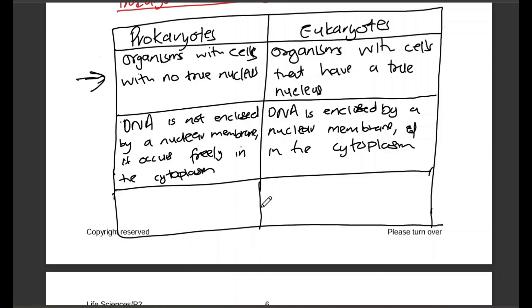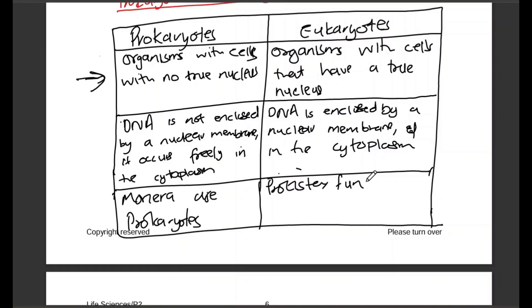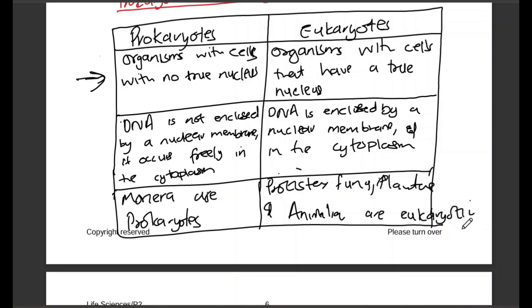For the third difference: prokaryotes include Monera, which is basically bacteria. The other kingdoms — Protista, Fungi, Plantae, and Animalia — are all eukaryotes. Another point from the memo is that no true organelles occur in the cytoplasm for prokaryotes, whereas for eukaryotes true organelles do occur in the cytoplasm.